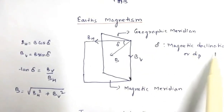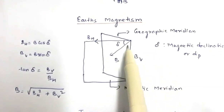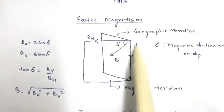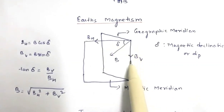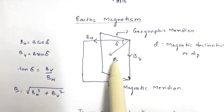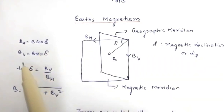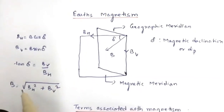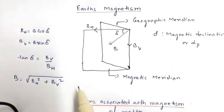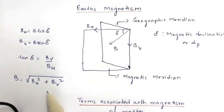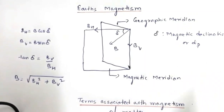Magnetic declination is also called dip. If B is the resultant field and δ is the dip angle, then the horizontal component of Earth's magnetic field is BH = B cosδ and the vertical component is BV = B sinδ. From these, you can calculate the value of dip and, if BH and BV are given, you can calculate the resultant magnetic field.